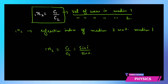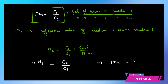When the ray travels from the second medium back to the first medium, that gives you 2n1 — the refractive index of the first medium with respect to the second — which equals c2 divided by c1. This clearly indicates that 1n2 equals 1 over 2n1, meaning they are inversely related to each other.